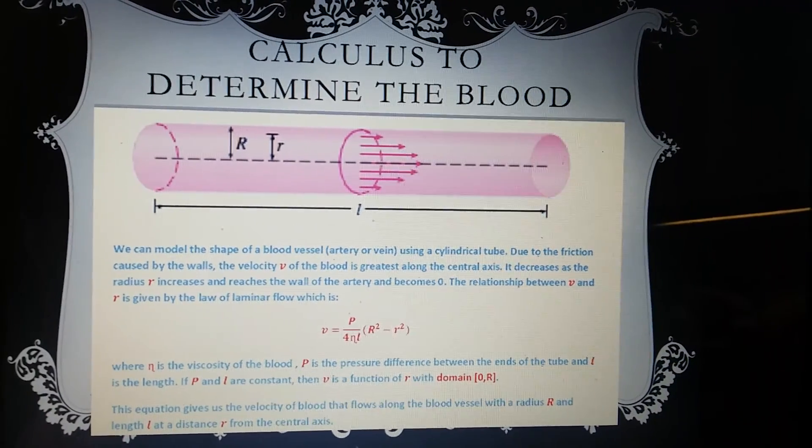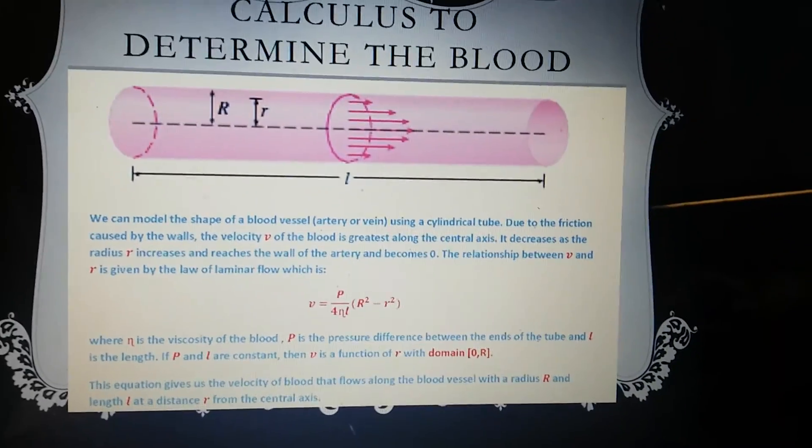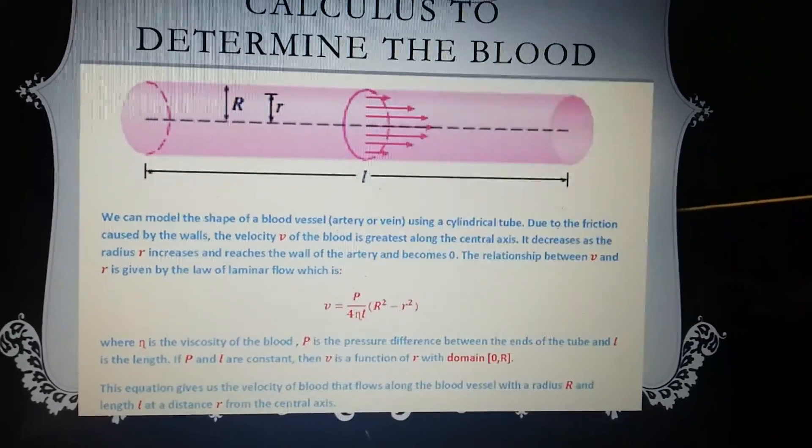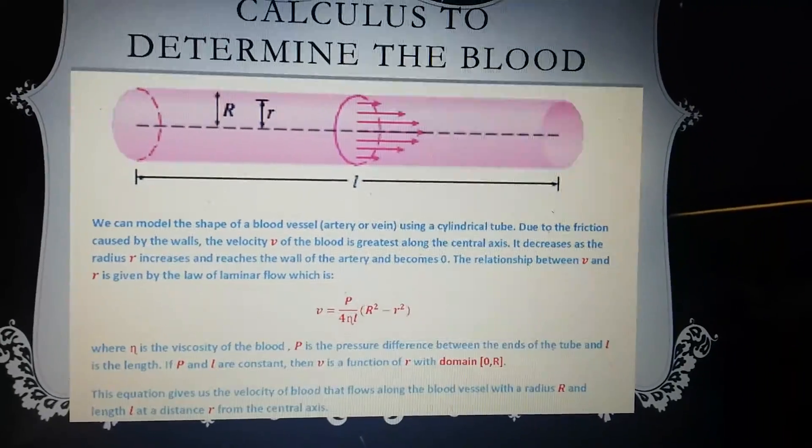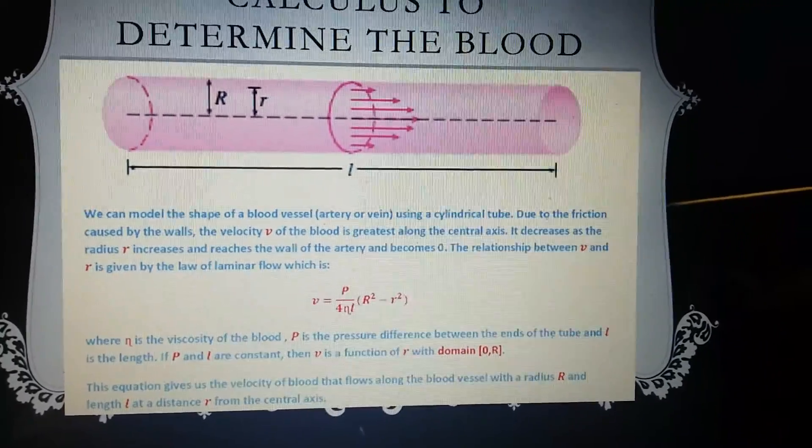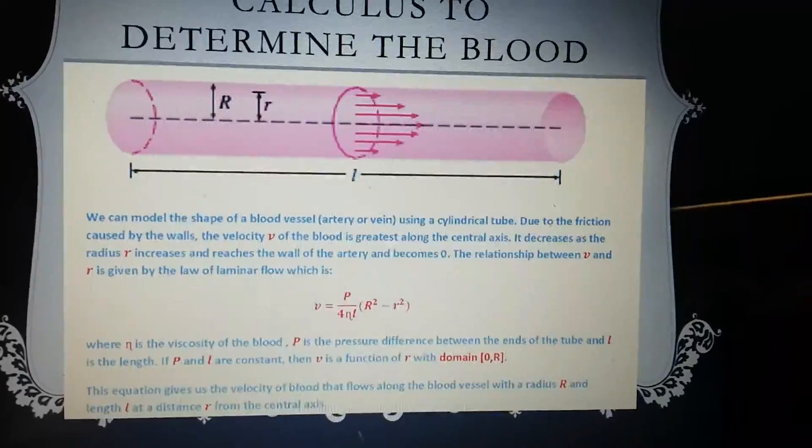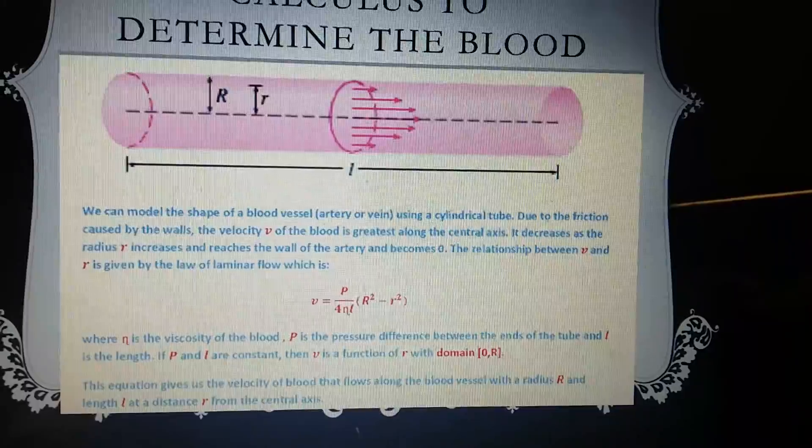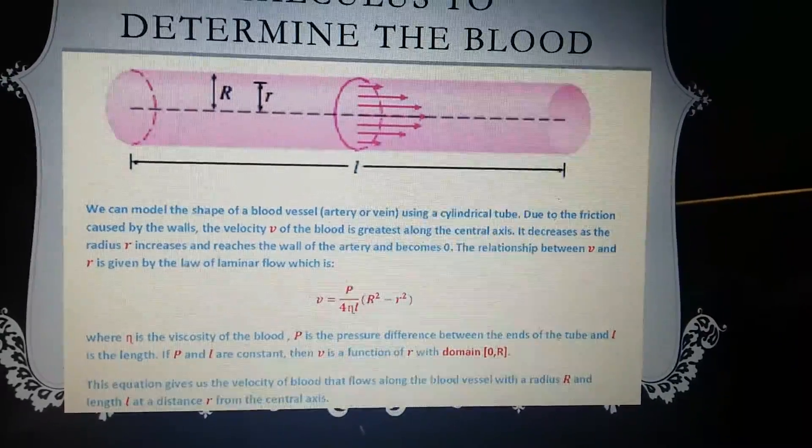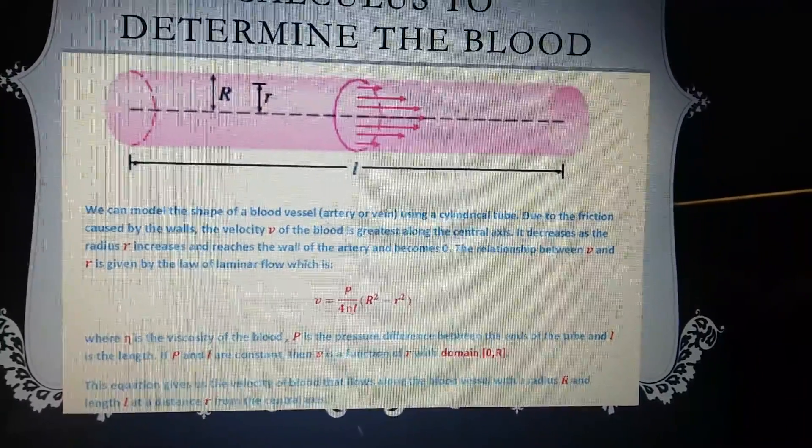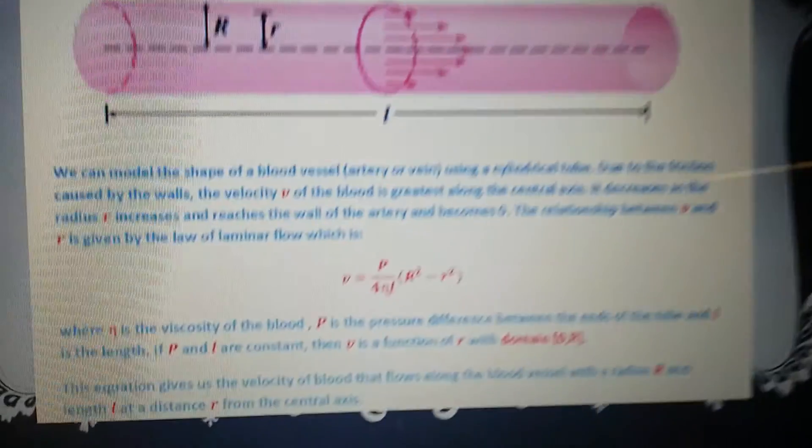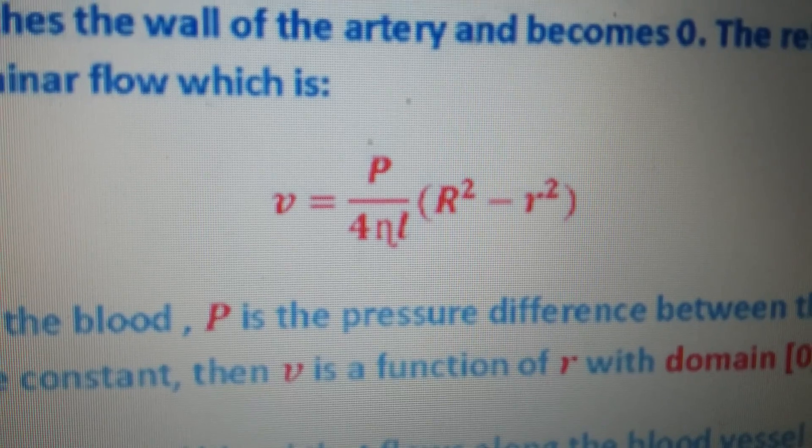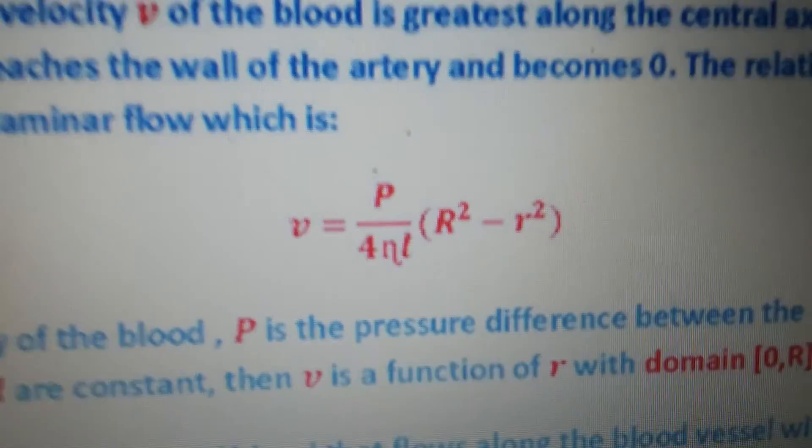So calculus is used to determine the blood flow through the arteries. We can model the shape of blood vessel, artery, or vein using a cylindrical tube. Due to the friction caused by the walls, the velocity of the blood is the greatest along the central axis. It decreases as the radius R increases and reaches the wall of the artery and becomes zero. The relationship between V and R are given by the law of laminar flow, which is this formula.